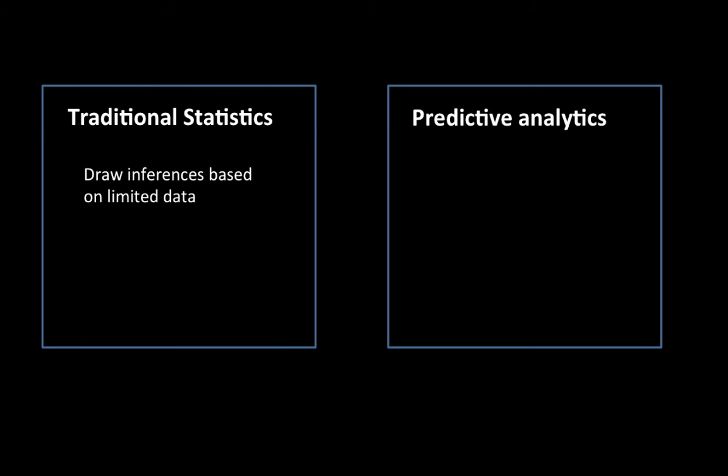In traditional statistics, we had to draw inferences based on limited data. When you look at traditional statistics and the concepts they employ, the assumption on which traditional statistical theory was built was that we have limited amount of data, we have limited amount of processing capability to process the data. With those limitations, brilliant statisticians developed theories by which you could make very good inferences based on only a small amount of data.